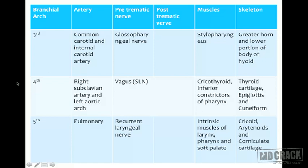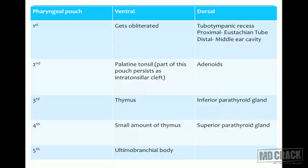The third arch: arteries - common carotid and internal carotid; pre-trematic nerve - glossopharyngeal; muscle - stylopharyngeus; bones - greater horn and lower portion of hyoid body. The third, fourth, and fifth arches do not have a post-trematic nerve. The fourth arch: arteries - right subclavian and left aortic arch; nerve - superior laryngeal branch of vagus; muscles - cricothyroid and inferior constrictors of pharynx; bones - thyroid cartilage, epiglottis, and cuneiform. The fifth arch: artery - pulmonary artery; nerve - recurrent laryngeal nerve; muscles - intrinsic muscles of larynx, pharynx, and soft palate; bones - cricoid, arytenoid, and corniculate cartilages.